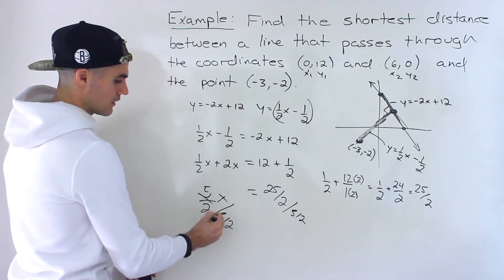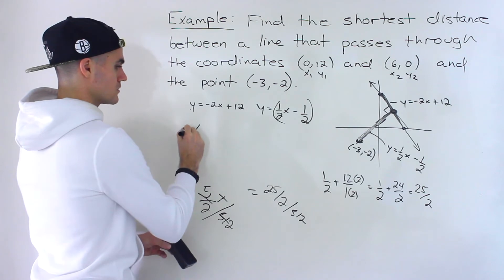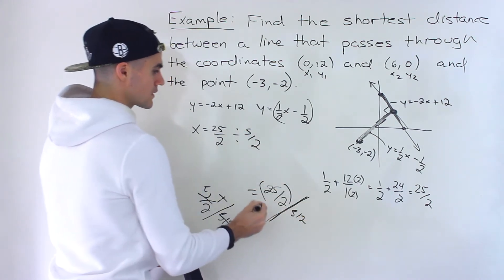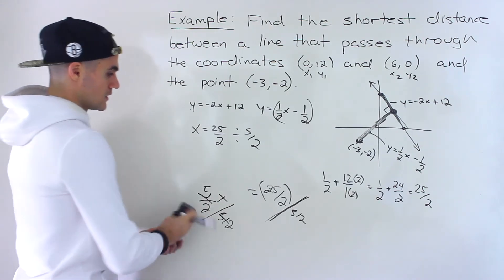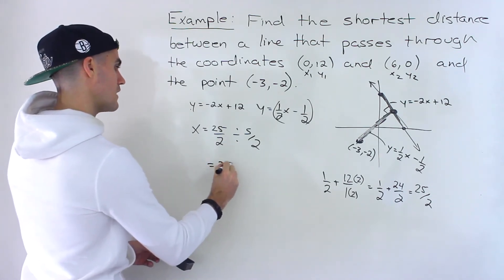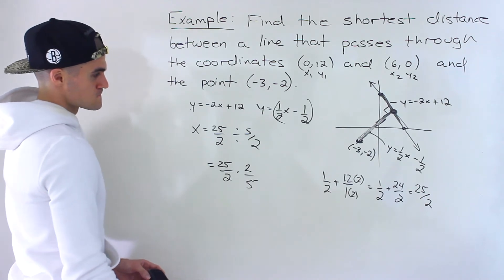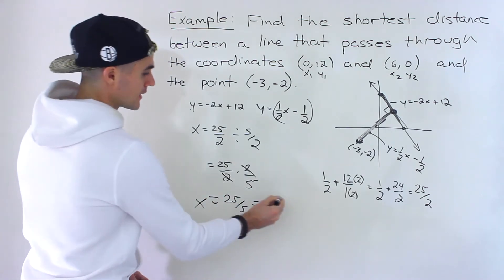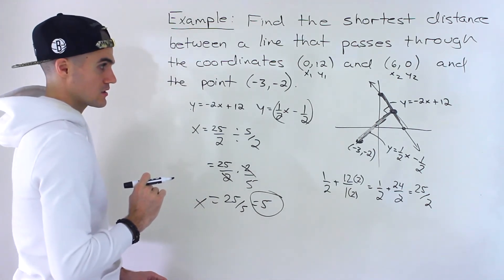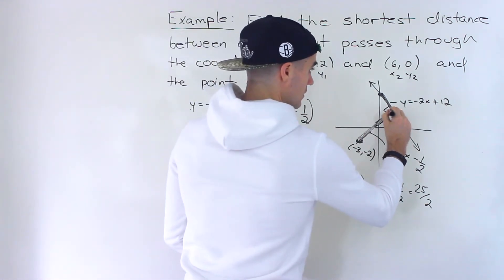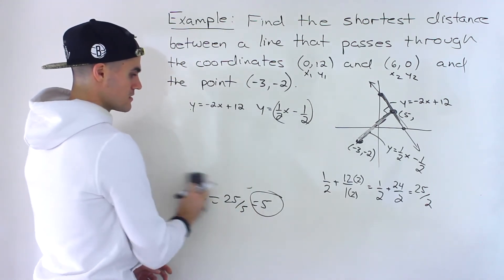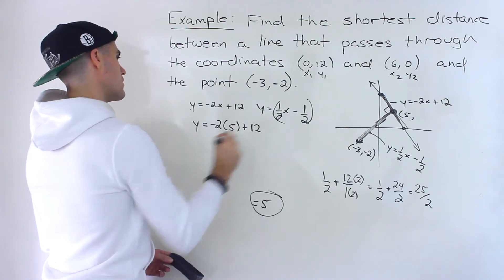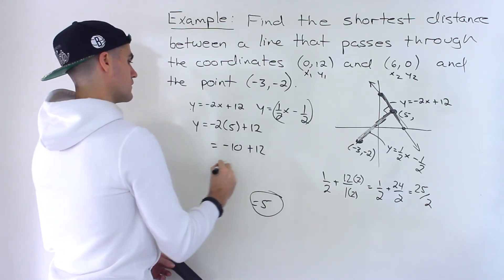To isolate x, divide both sides by 5/2: x = (25/2) ÷ (5/2) = (25/2) × (2/5). The 2s cancel, and 25/5 = 5, so x = 5. To find y, plug x = 5 into y = -2x + 12: y = -10 + 12 = 2. So the intersection point is (5, 2).